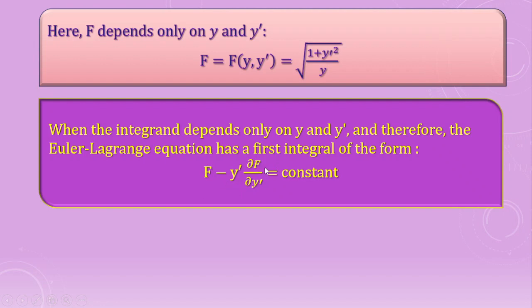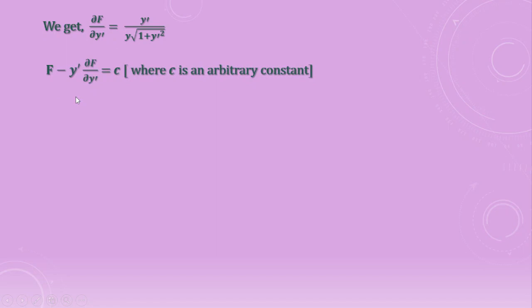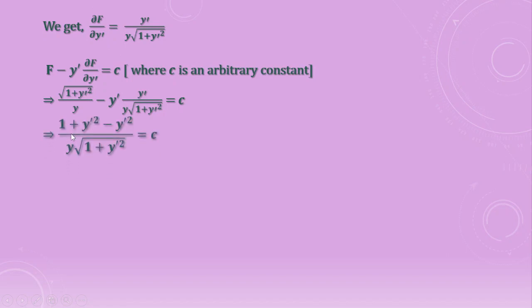When the integrand depends only on y and y', the Euler-Lagrange equation takes the special form: f minus y' · ∂f/∂y' equals constant. Computing ∂f/∂y', we get y' divided by (y · sqrt(1 + y'^2)). Substituting f and ∂f/∂y' into the equation f minus y' · ∂f/∂y' equals c, and simplifying, we obtain 1 / (y · sqrt(1 + y'^2)) equals c.